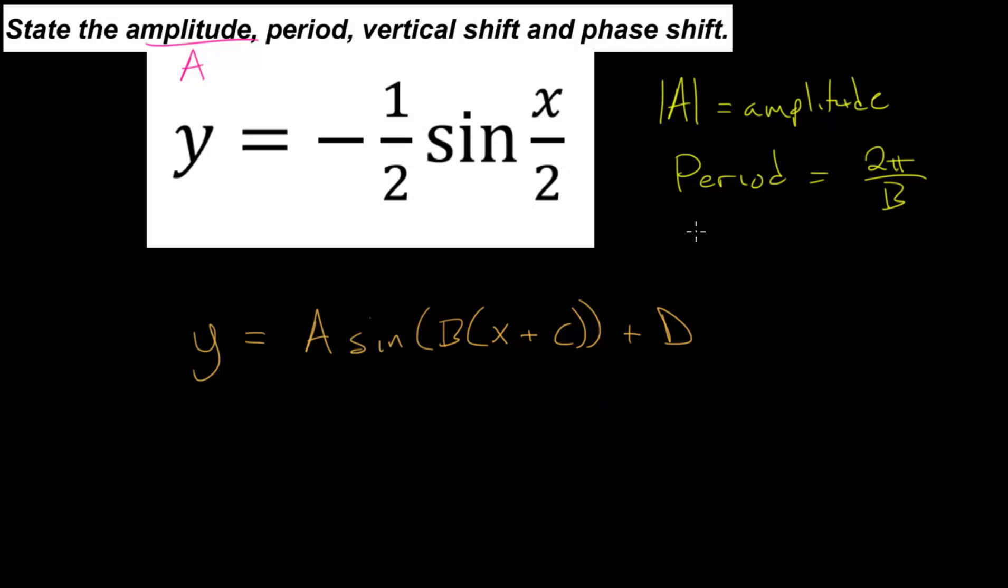We could say that c is related to what's known as the phase shift. It has to do with horizontally shifting this sinusoidal function left or right. If it's positive, it will actually shift it to the left. If it's negative, it shifts it to the right, the opposite of what you might expect, but horizontally shifting functions will go in the opposite direction.